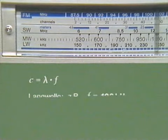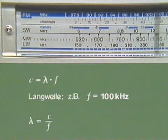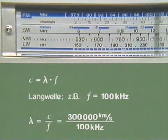Dazu die Langwelle. Sie beginnt bei etwa 100 Kilohertz. Wir rechnen die Wellenlänge aus: λ gleich c dividiert durch f gleich 300.000 Kilometer pro Sekunde dividiert durch 100 Kilohertz. Das ergibt drei Kilometer. Betrachten wir einen anderen Bereich mit einer viel kürzeren Wellenlänge, die um drei Zehnerpotenzen kleiner ist: drei Meter. Dann müssen wir entsprechend die Frequenz um drei Zehnerpotenzen größer machen, also 100 Megahertz – und das ist bekanntlich Ultrakurzwelle.